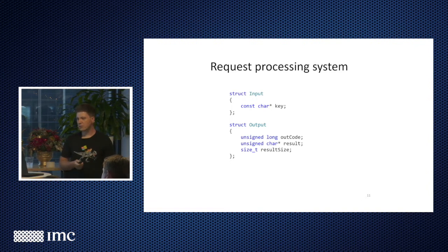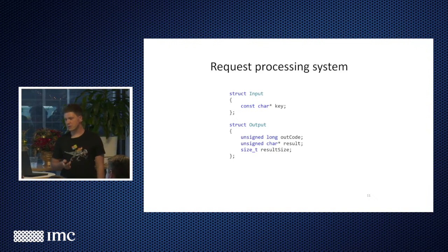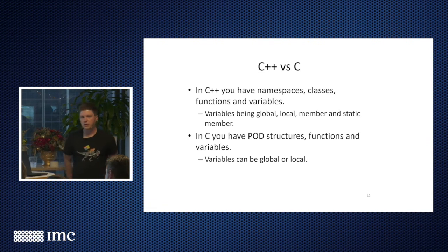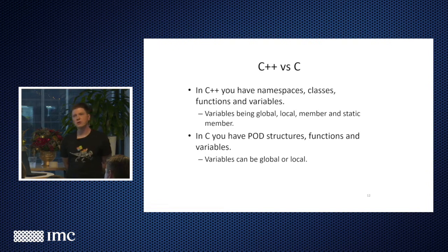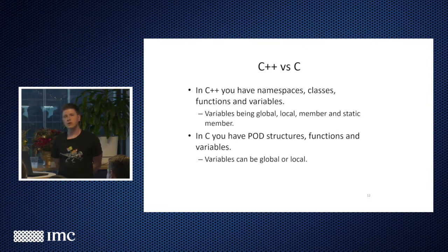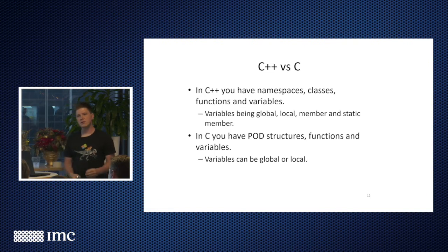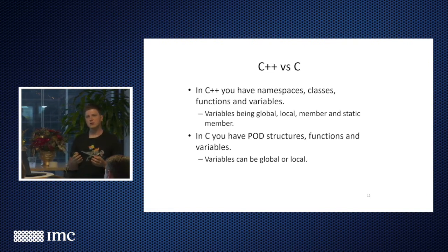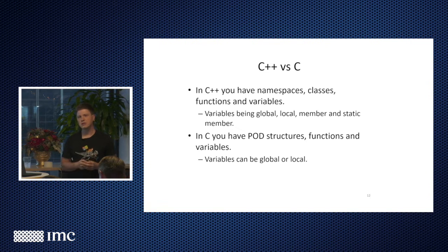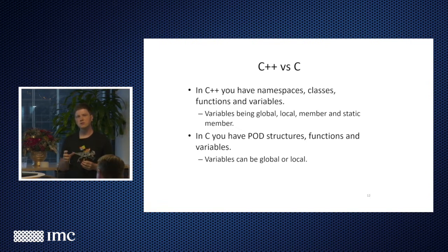So this is our input and output. We get string as an input, and then we get binary blob as a result. It's an error code. In C++ we have namespaces, classes, functions, and variables. In C you have structures, but they're very different structures. There's so-called plain old data type. You don't have constructors, you don't have destructors, you don't have any complex type. In C++, structure is effectively class where everything is public. It's still a class. In C structure, it just holds data for you. That's all it does. Structure cannot do any work.